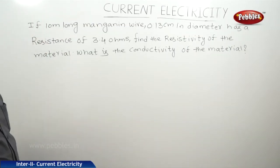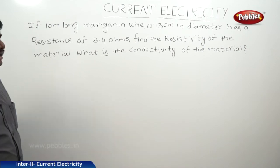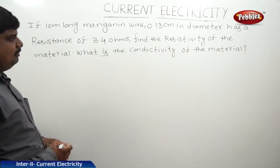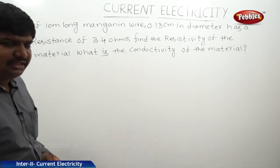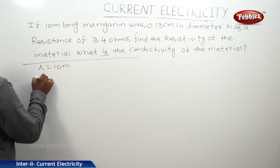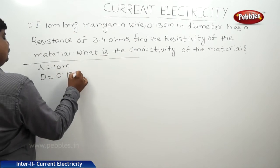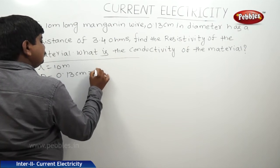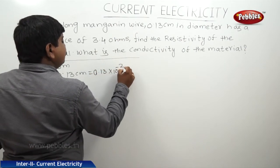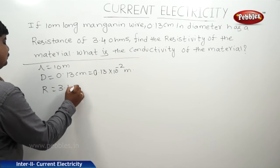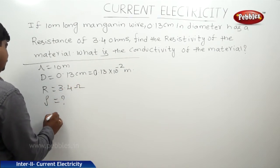The next problem is based on the resistance of the material. A 10 meter long manganin wire — manganin is a material — 0.13 centimeter in diameter has a resistance of 3.4 ohms. Find the resistivity of the material and its conductivity. The length of the wire is 10 meters, the diameter is 0.13 centimeter, which is 0.13 into 10 to the power of minus 2 meters, and the resistance is 3.4 ohms.